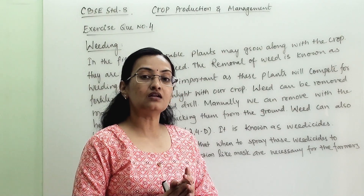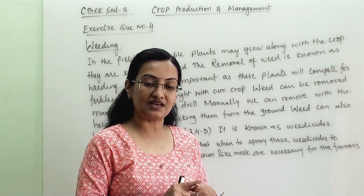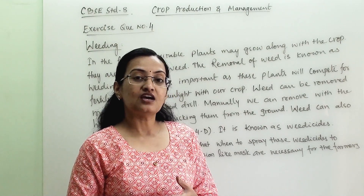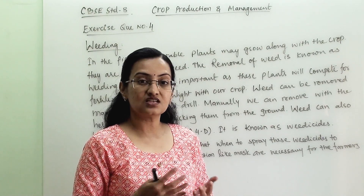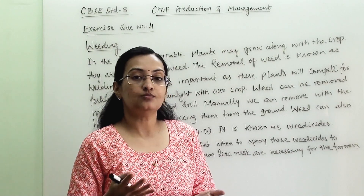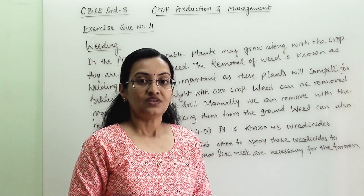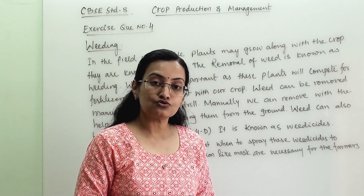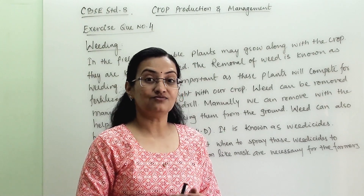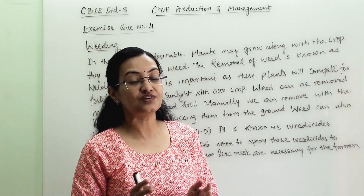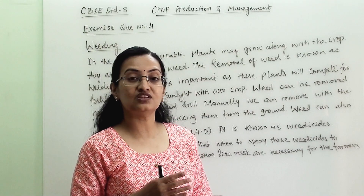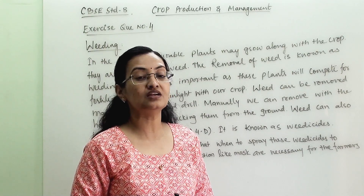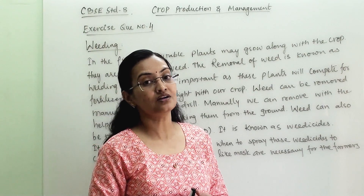Weeding can be done by two methods: manually and with a seed drill. Manually, we do it with the khurpi, and seed drills use a machine. Some chemicals are also available in the market which are known as weedicides, and by spraying these weedicides we can control weeds in our farm.